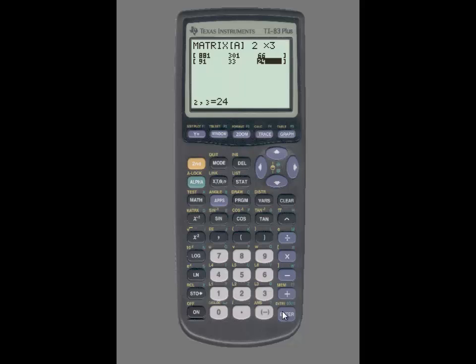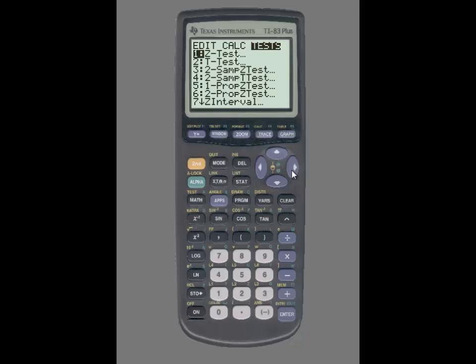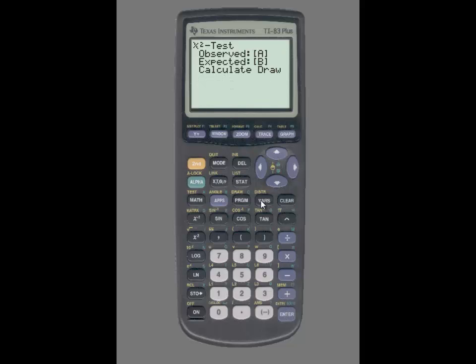Once all of the cell counts are entered, you're then going to press stat. Use the right arrow key to highlight test. Scroll down until you see chi-square test. Here you'll simply leave observed and expected as it is. Go to calculate to highlight that and press enter.